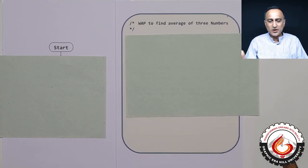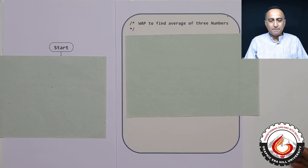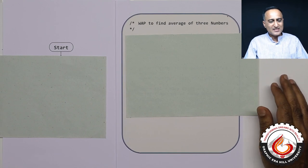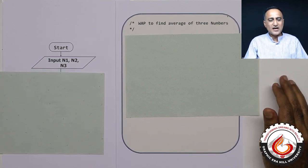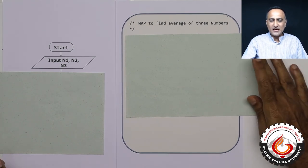We shall now transform another flowchart which was developed by the professor sir into the corresponding program. Here what sir had done is he had shown you two ways in which given an input three numbers how to find the average.